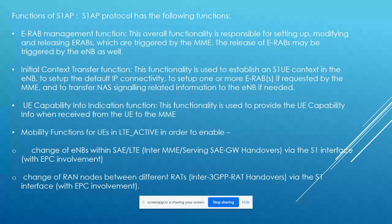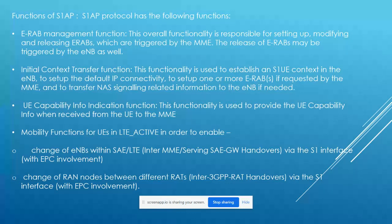The initial context setup transfer function is used to set up the default IP connectivity, to set up one or more E-RABs as requested by the MME, and for the transfer of NAS signaling. The UE capability info indication function is used in NAS PDU messages when the UE sends its capabilities to the network — for example, whether the UE can handle VoLTE calls or 5G.